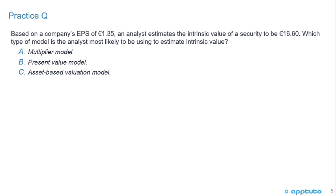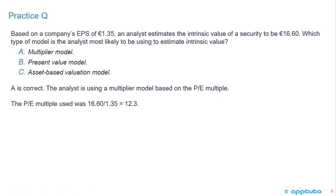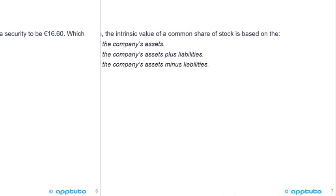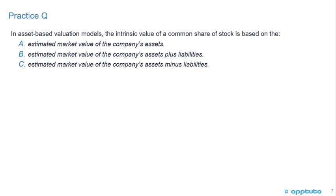Another practice question: Based on a company's earnings per share of €1.35, an analyst estimates the intrinsic value of a security to be €16.60. Which type of model is the analyst most likely using? A) multiplier model, B) present value model, or C) asset-based valuation model. A is correct. The analyst is using a multiplier model based on the P/E model. The PE multiple used was 16.60 divided by 1.35, which equals 12.3.